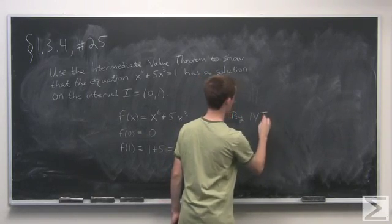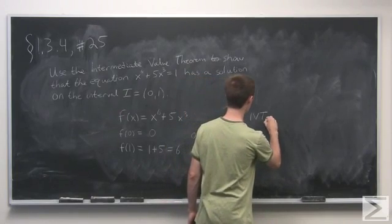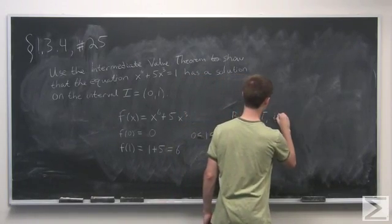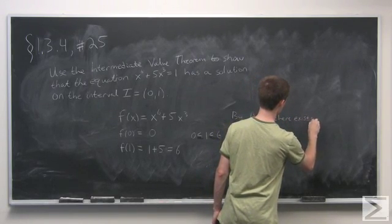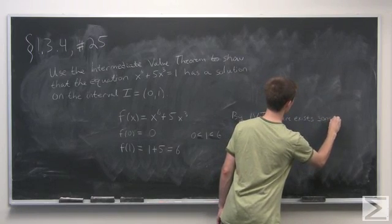By the intermediate value theorem, or just IVT for short, we know that there exists some number c.